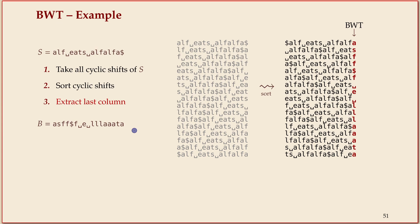Any column in this matrix has each position of the text exactly once, because we shifted everything through by one position. When we sort by reordering rows, that doesn't change the property that every column has each position exactly once. So in particular, the last column has every character of the original text exactly once — just scrambled up.